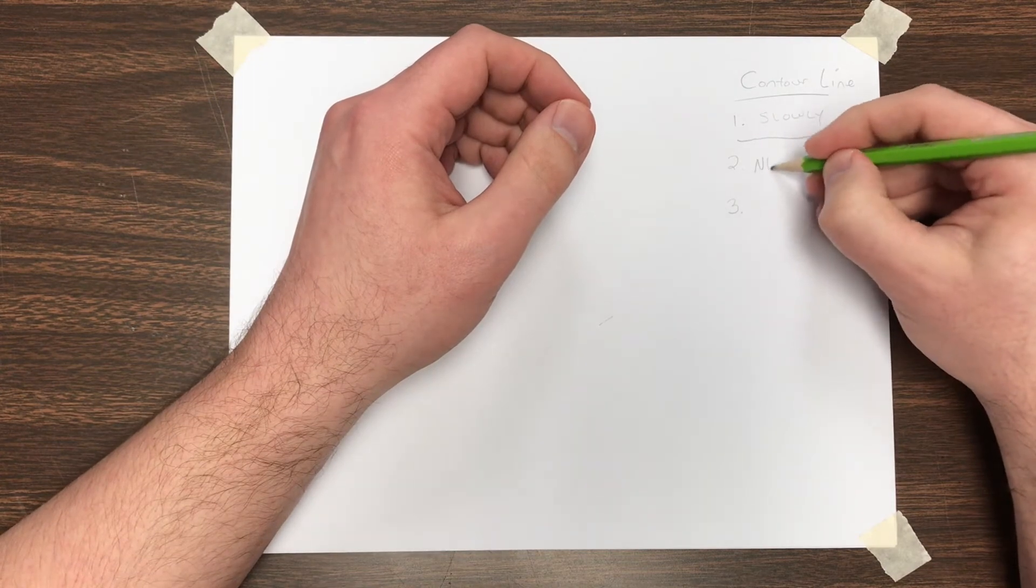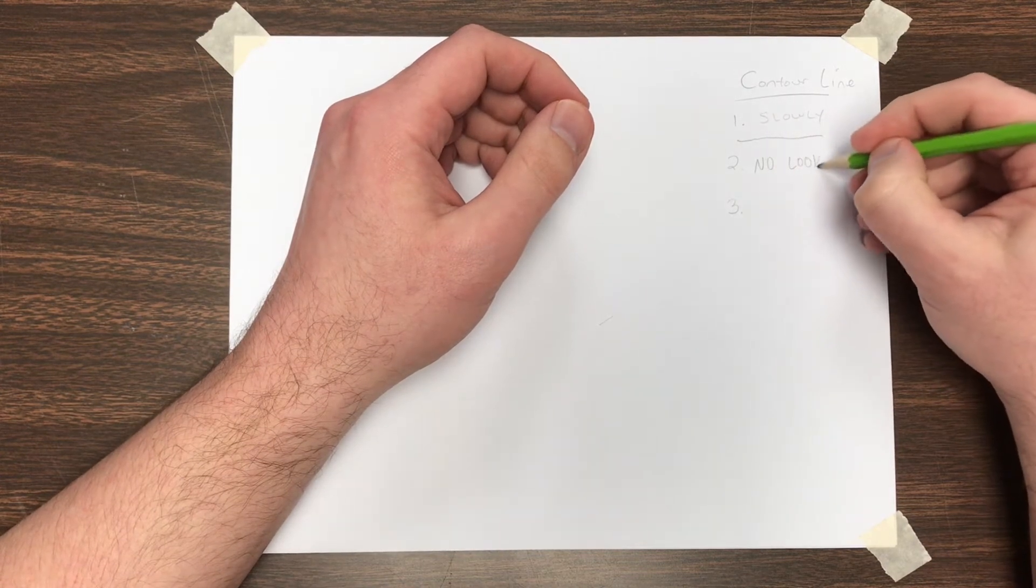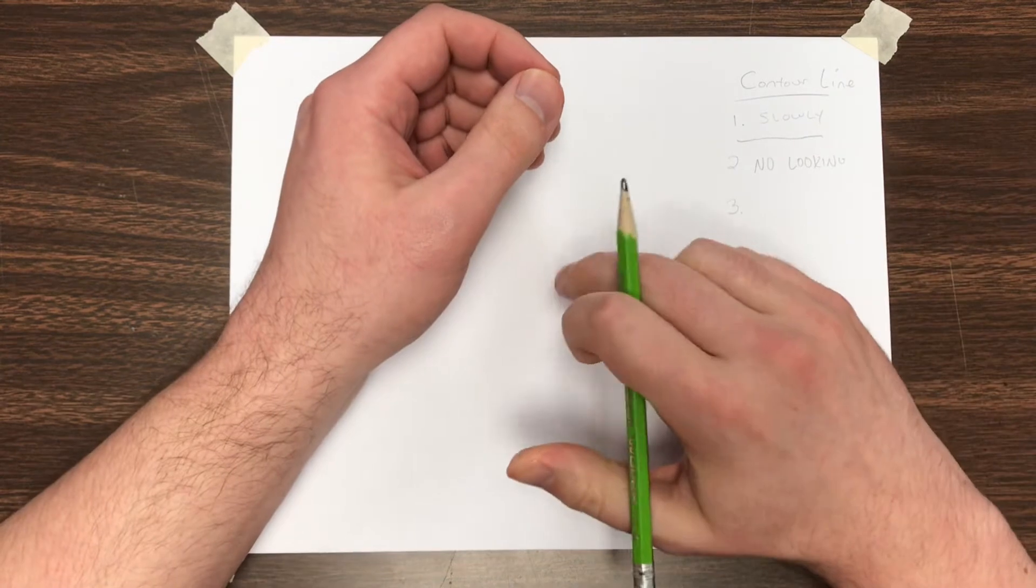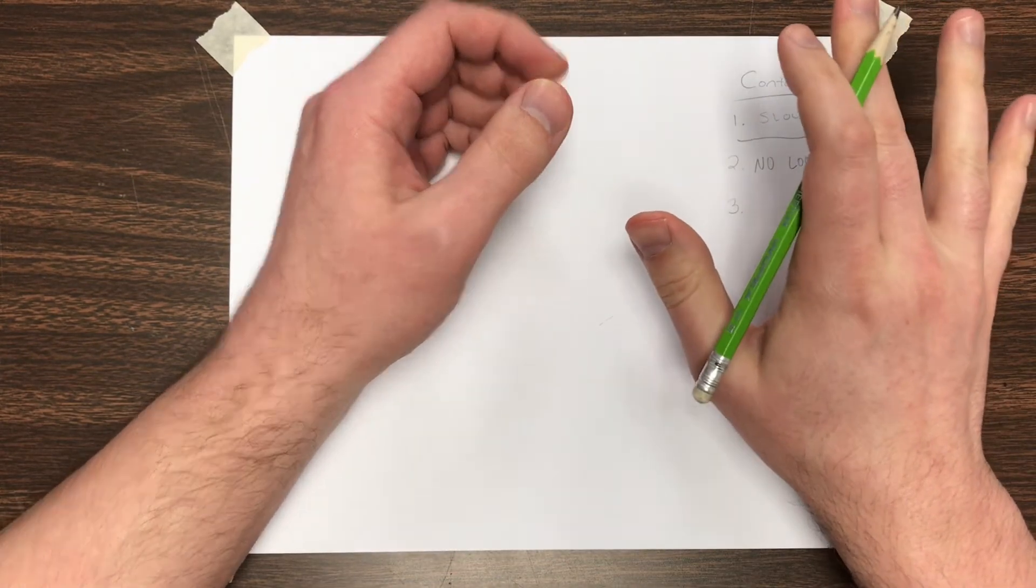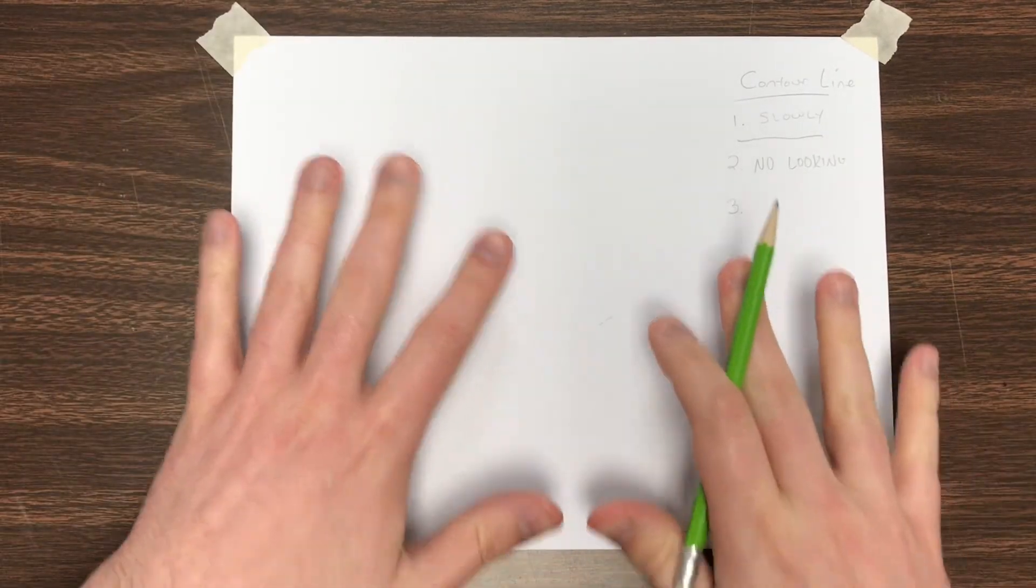Number two, no looking. You are not going to look at the paper throughout the whole drawing. So turn your body away so that your eyes will not even be anywhere near this paper because you're not looking. What you do, the product is not important for these first couple drawings. What's most important is that you slow your brain down and focus on the details in your hand.